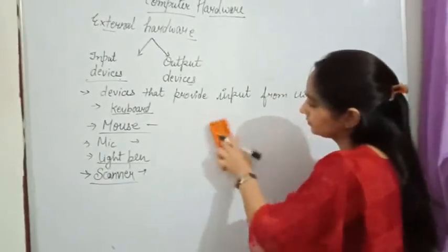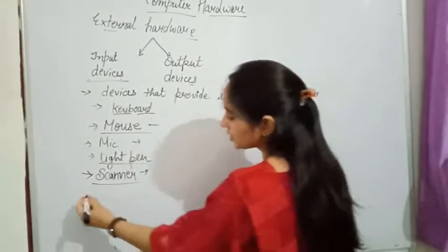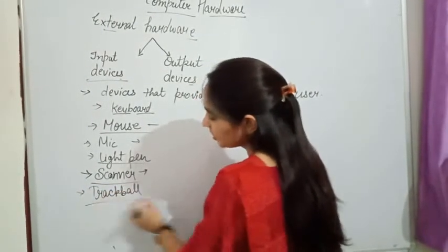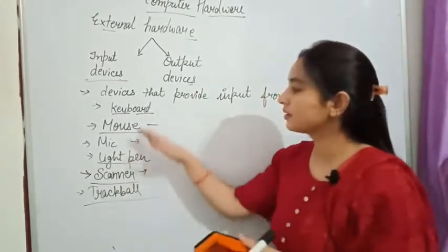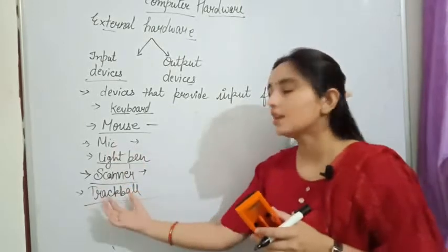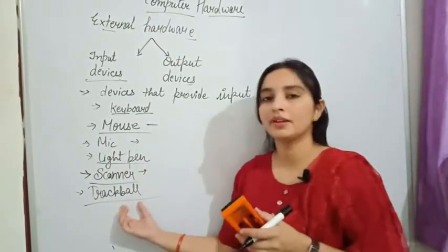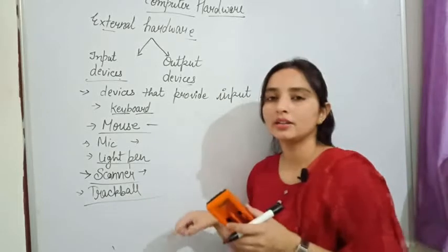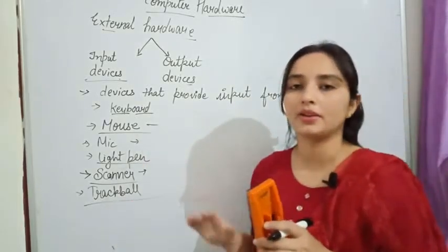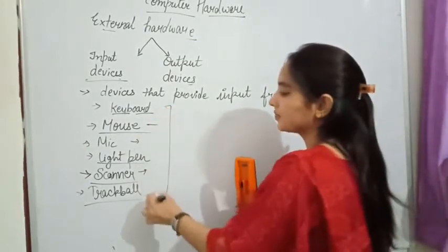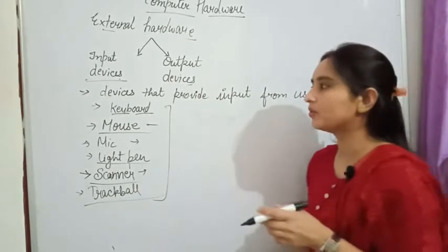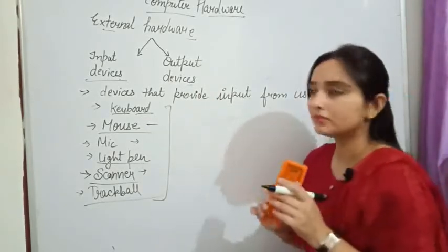Next we have the joystick or trackball. It is also a mouse-type input device, but the difference is it has a ball that you rotate to control the pointing arrow. These are the various types of input devices — we have many more, but we have covered a key selection.